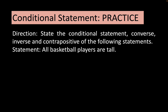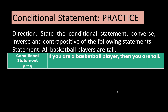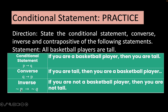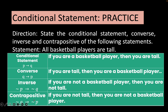Another example: 'All basketball players are tall.' Let p be 'you are a basketball player' and q be 'you are tall.' Conditional (p implies q): if you are a basketball player, then you are tall. Converse (q implies p): if you are tall, then you are a basketball player. Inverse (not p implies not q): if you are not a basketball player, then you are not tall. Contrapositive (not q implies not p): if you are not tall, then you are not a basketball player.